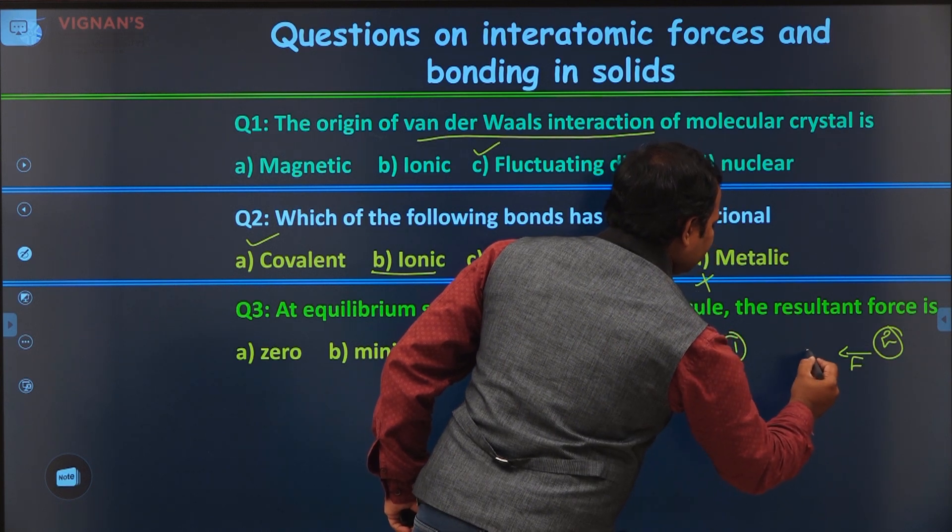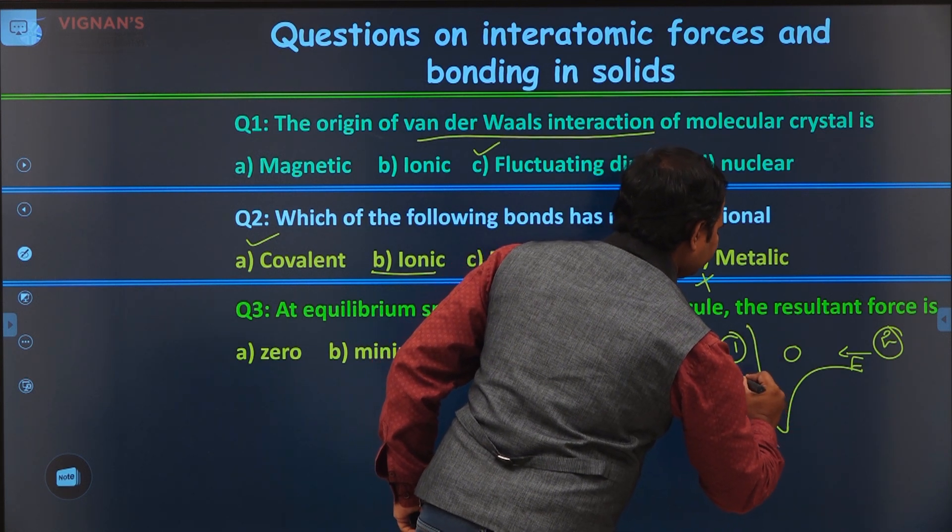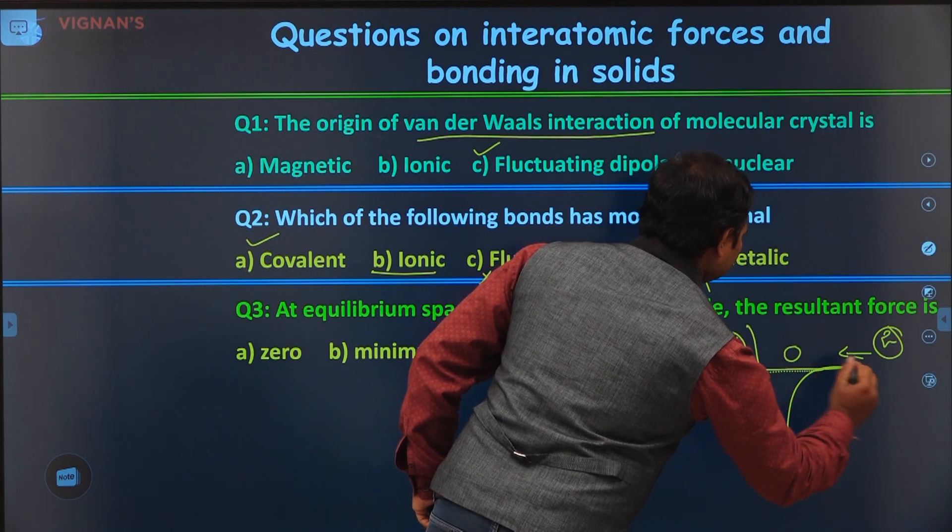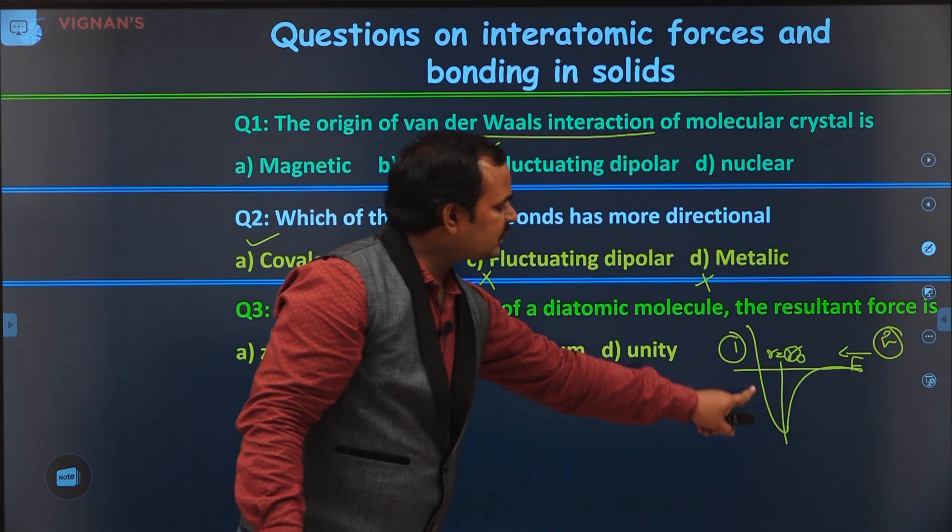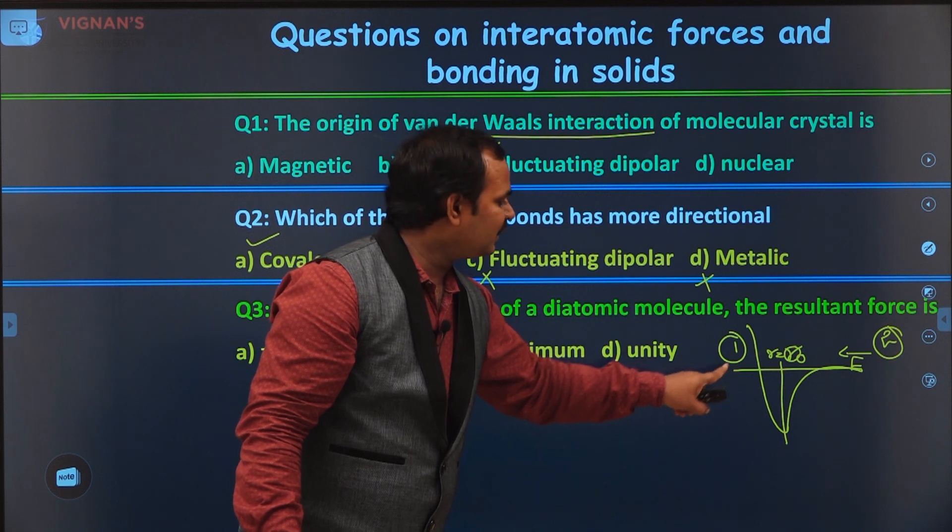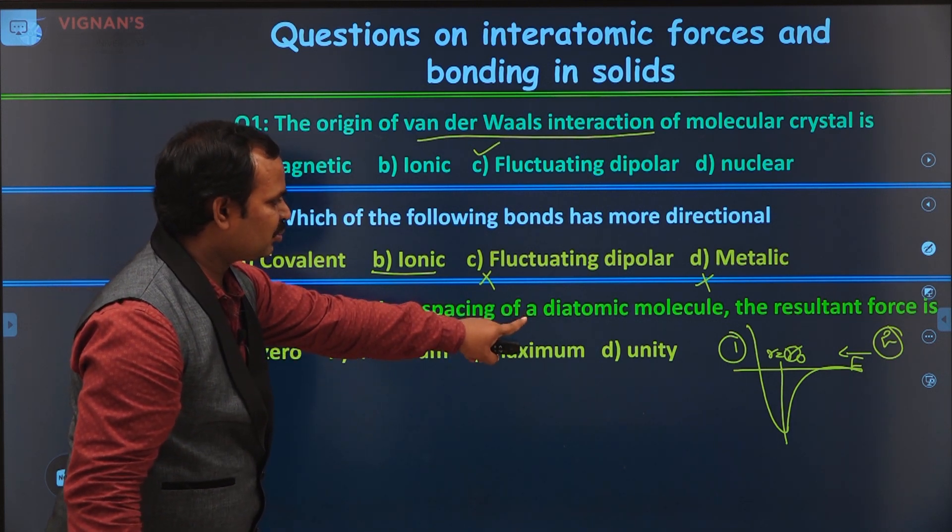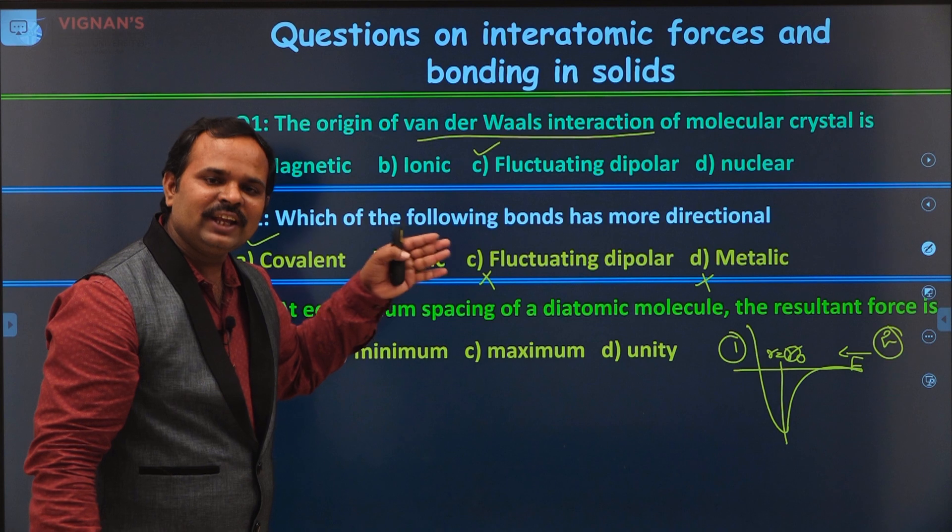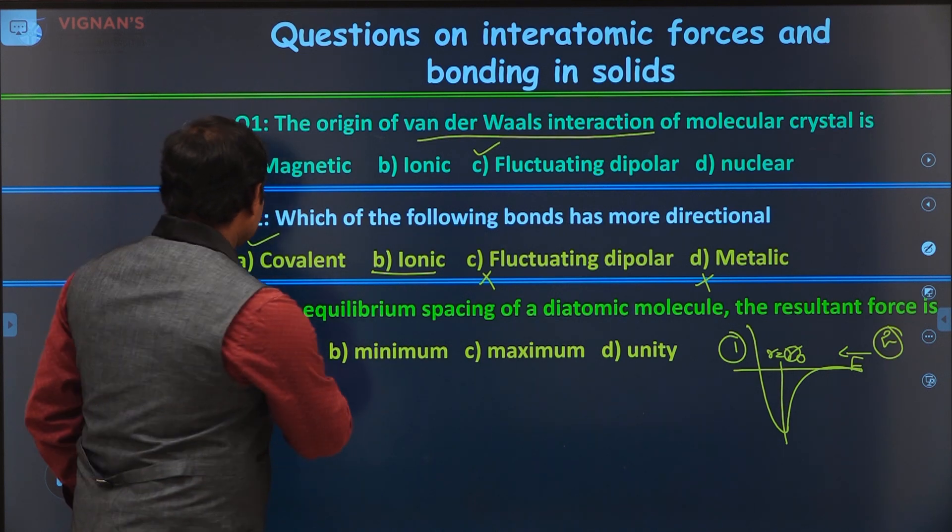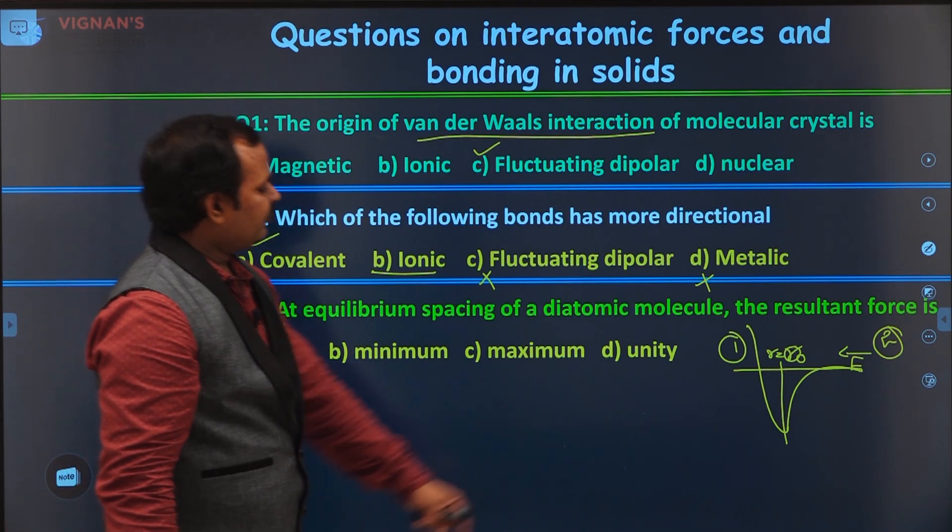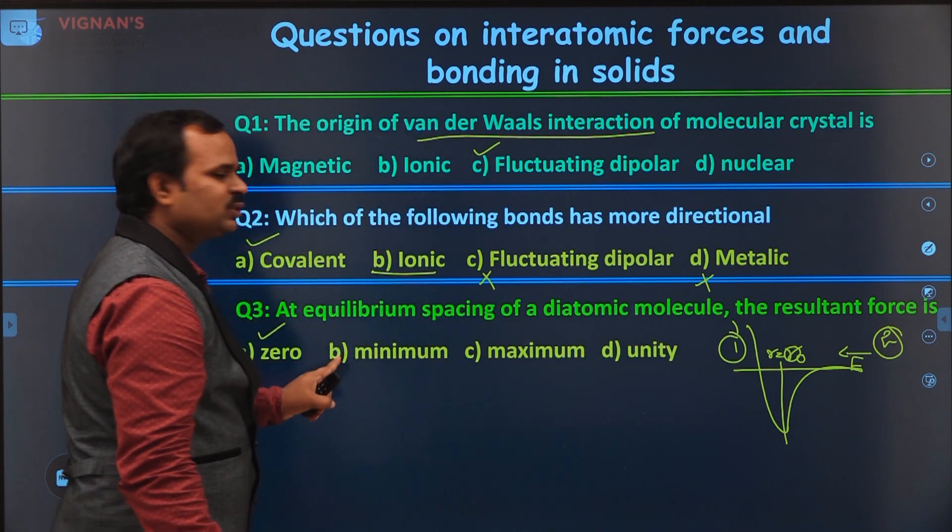But when this atom is coming closer to some distance, if you remember this is the diagram. So at equilibrium distance, r is equal to r0, the force of attraction and force of repulsion exactly balance. And at this distance, the two atoms will have bond formation. You can see here, at equilibrium spacing of the diatomic molecule, the resultant force is. At the equilibrium distance, the force of attraction and force of repulsion are exactly balanced. That means the resultant force is zero. And if you bring it a little closer, there will be a repulsive force. So at exactly equilibrium position, the resultant force is zero.